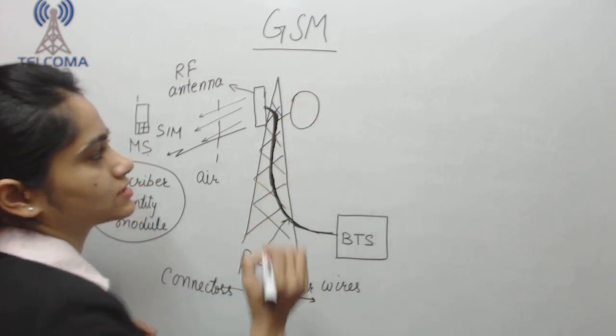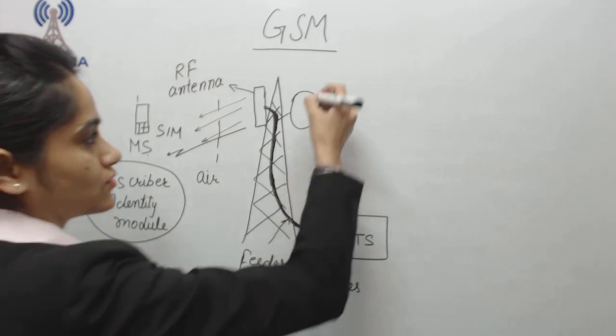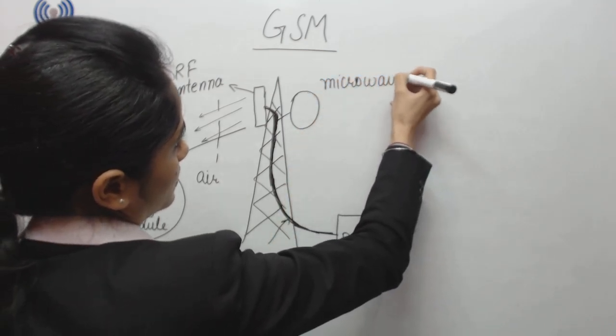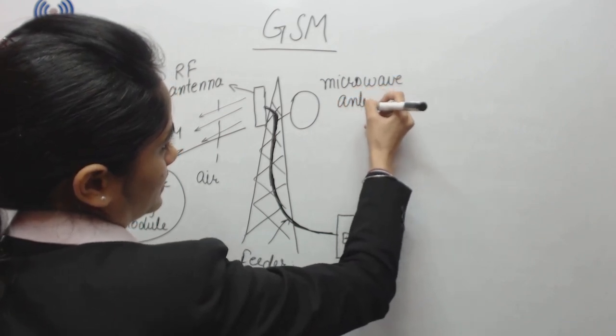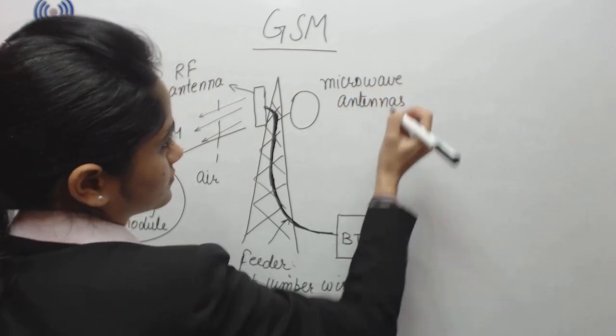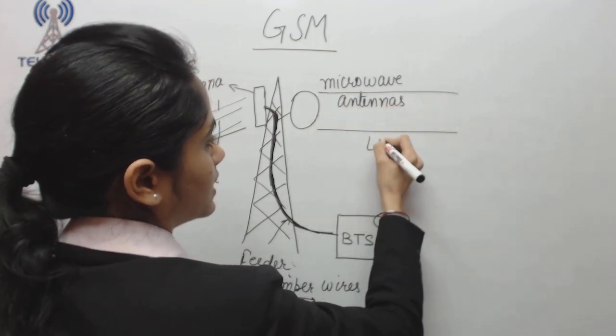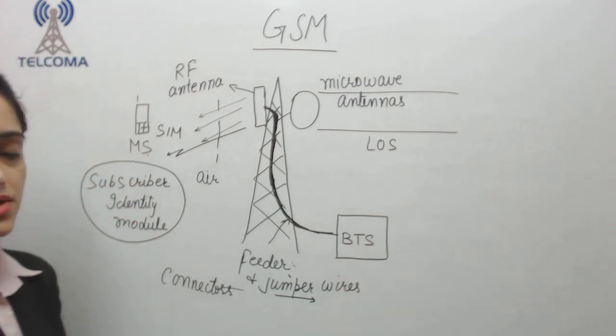Other than this, if you see the tower, on which we have another type of antenna also, which is circular in shape. We call it the microwave antenna. Microwave antennas work on the principle of line of sight.